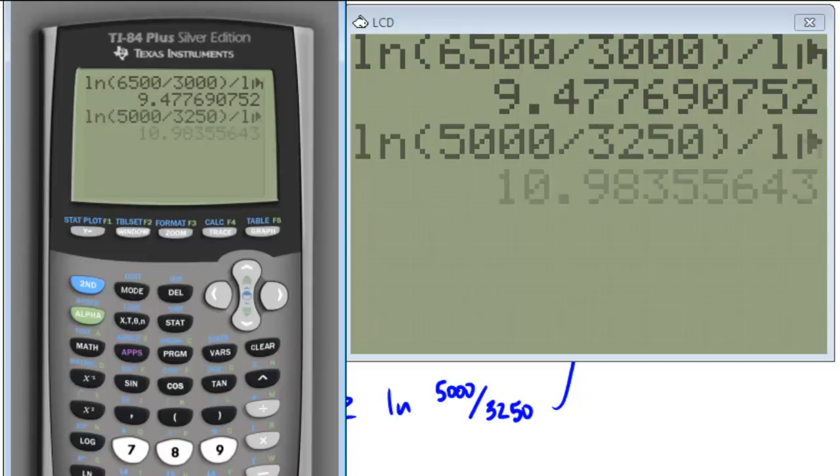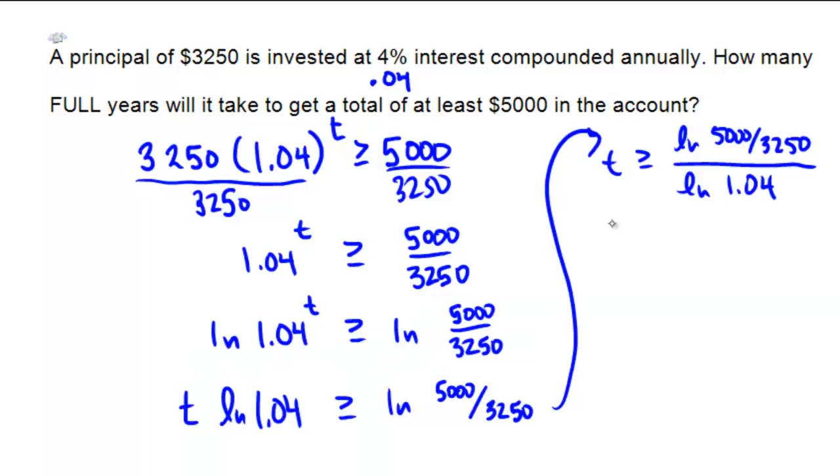And the answer that we get from the calculator is 10.98. And therefore, with the 10.98, we need T to be bigger than or equal to 10.98. And so we'll give an answer of T equals 11. We'll need to wait at least 11 years.